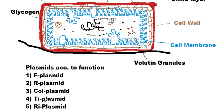Next is the Ti plasmid, which stands for tumor-inducing plasmid. Bacteria having this plasmid can secrete some toxic substances or mutagens that enter the genetic material of neighboring cells, causing mutations that lead to cells dividing very rapidly — which we call a tumor. So these bacteria can also cause cancer. One example is Agrobacterium tumefaciens, which carries the Ti plasmid.